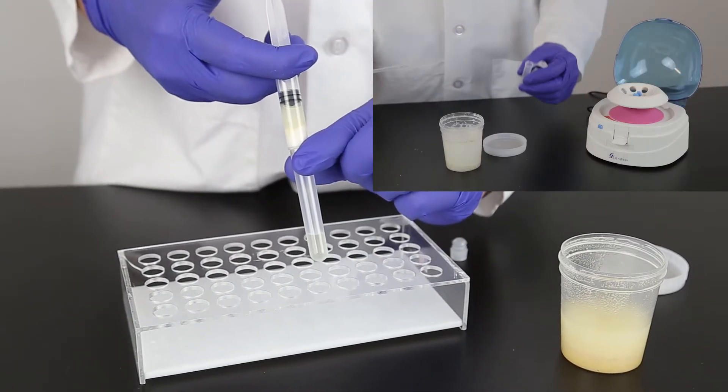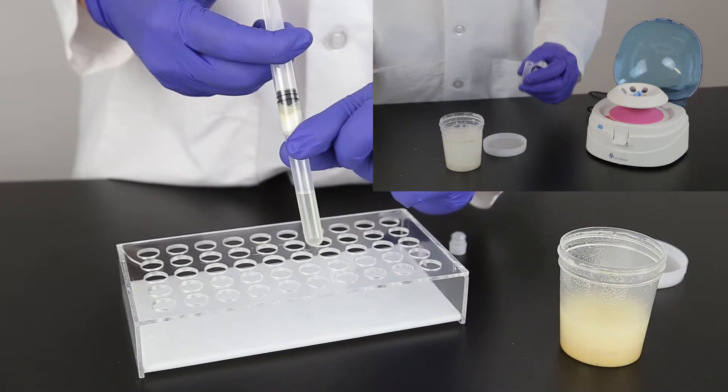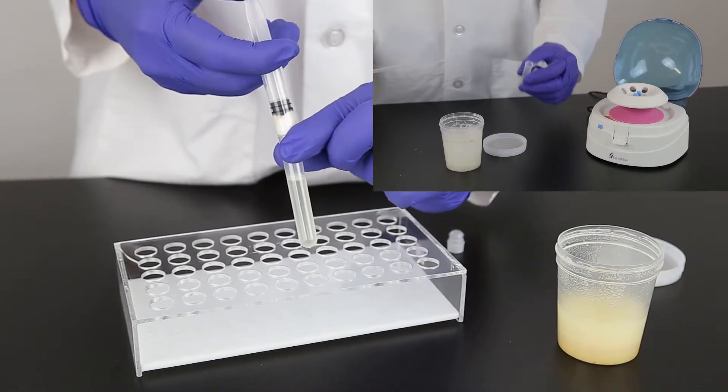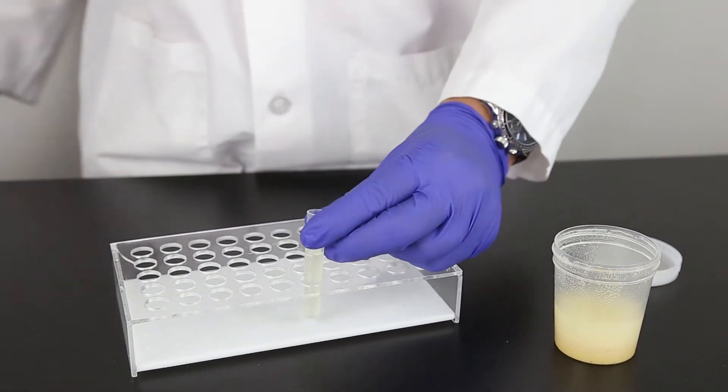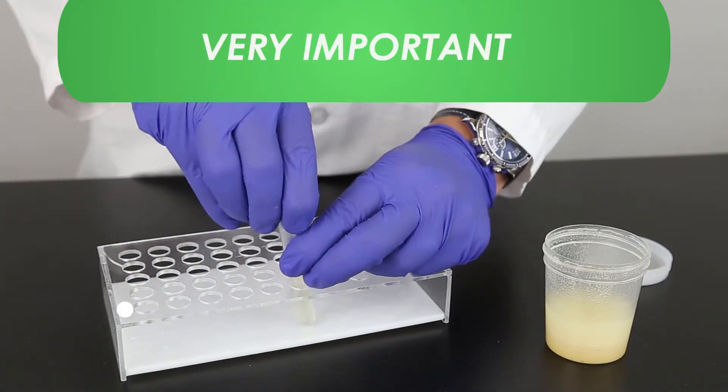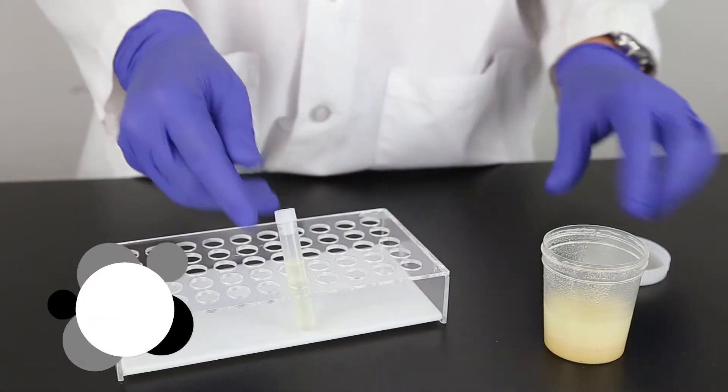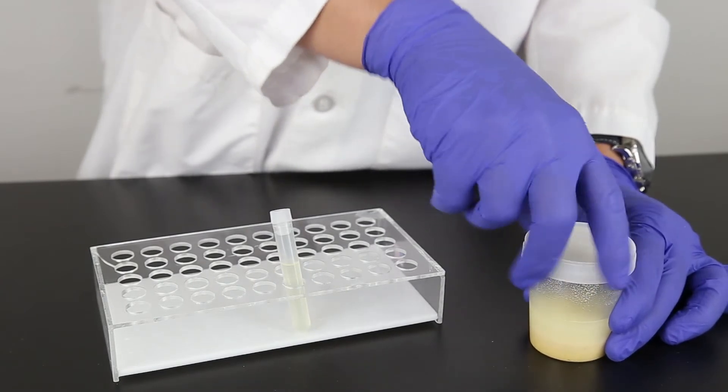You can also pipet the sample into a two milliliter microcentrifuge tube and centrifuge for 30 seconds. It is important to collect at least three milliliters of filtrate through a single filter syringe for optimal sample accuracy.